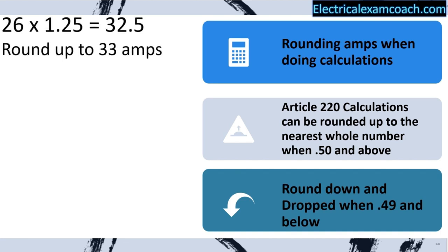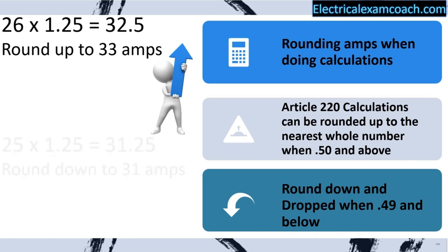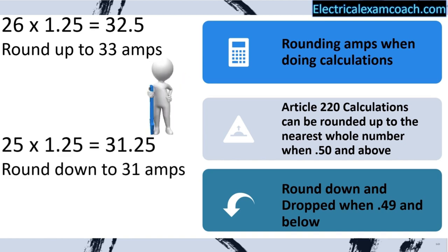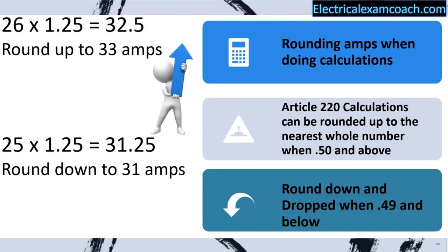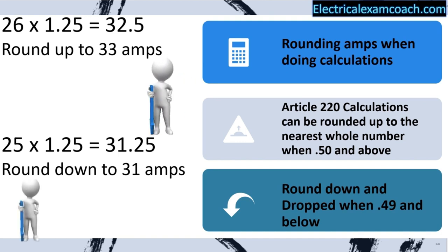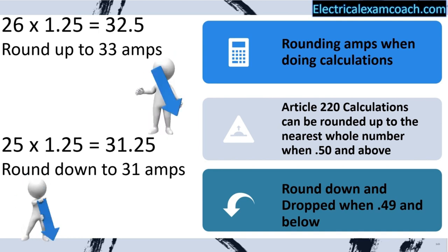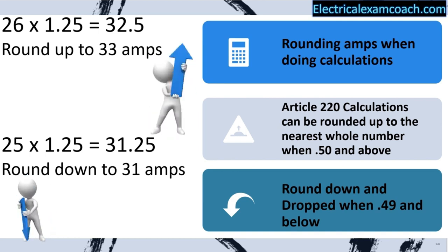Let's imagine we have a scenario where after all our math, 26 amps equals 32.5 amps — we round up to 33 amps. Now let's imagine a similar scenario where our answer is 31.25 — it's 0.49 or less, so we round down. That's how we're going to deal with all of our numbers in load calculations.